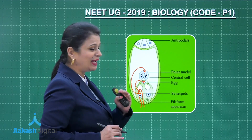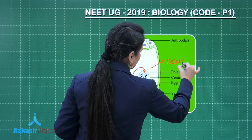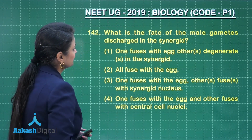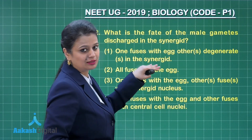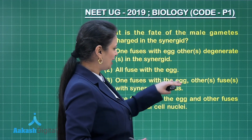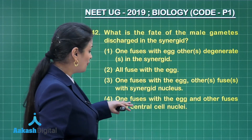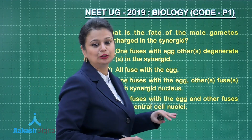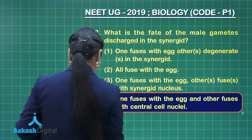This male gamete and the two polar nuclei fuse to form a triploid nucleus known as PEN — the primary endosperm nucleus. Looking at the options: one fuses with egg, other degenerates in the synergid — wrong. All fuse with the egg — not true. One fuses with egg, other fuses with synergid nucleus — wrong. One fuses with the egg and other fuses with central cell nuclei (polar nuclei) — correct. The right answer is option number four.